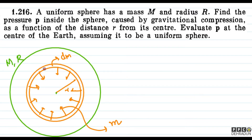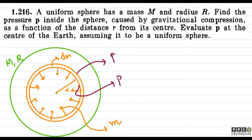Toh agar hum log kya karein, agar hum is shell par andar ki taraf lagne wale forces ka magnitude dekhein, aur bahar ki taraf forces jo lag rahe hain unka magnitude dekhein, toh woh barabar aana chahiye. Tabhi toh ye jo shell hai, ye na andar ja raha hai na bahar ja raha hai. Small r par pressure P hai, aur r plus dr par pressure P plus dP hai.